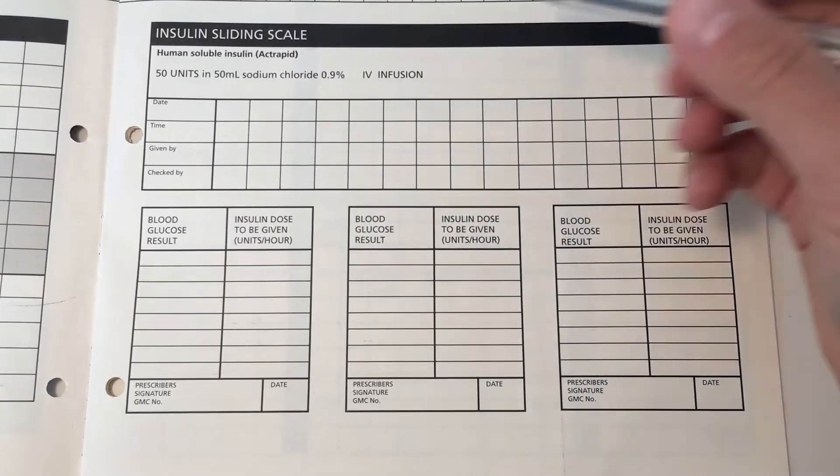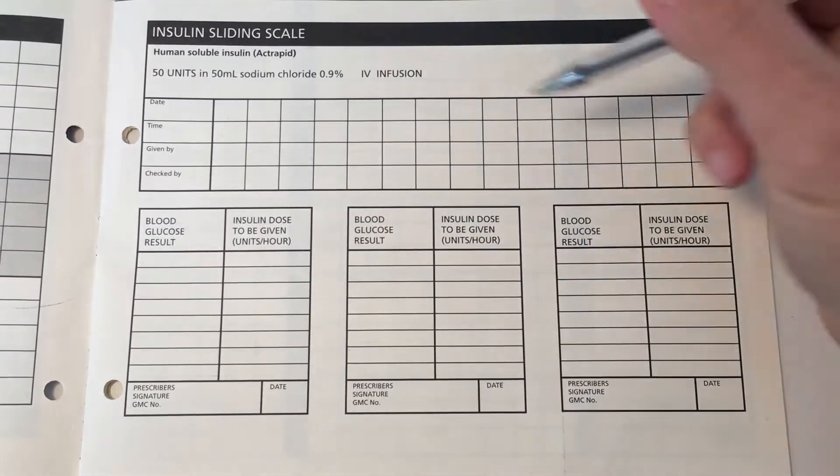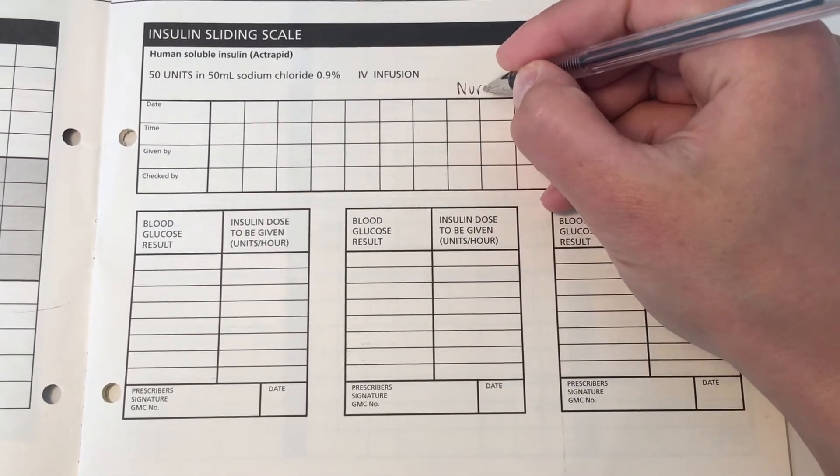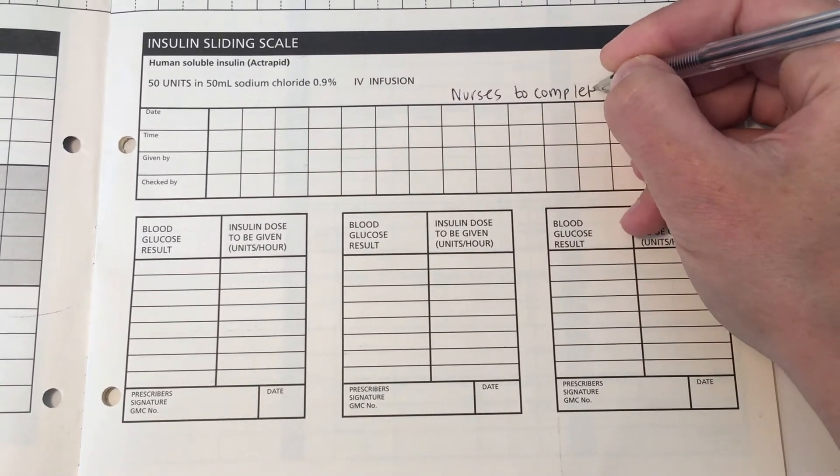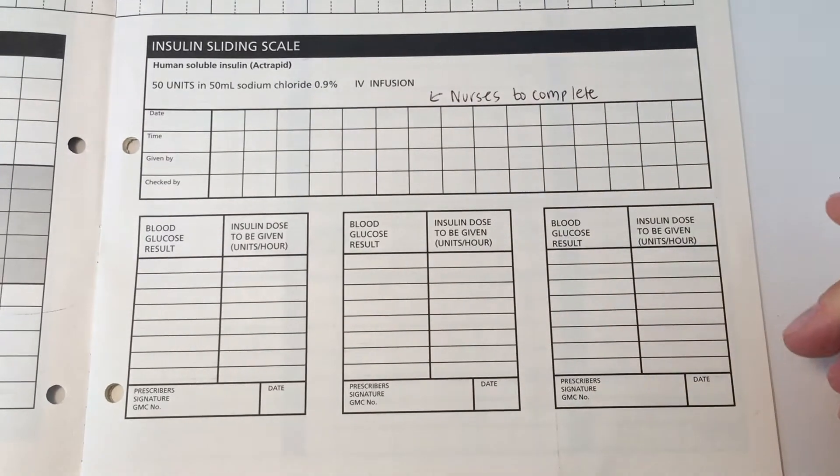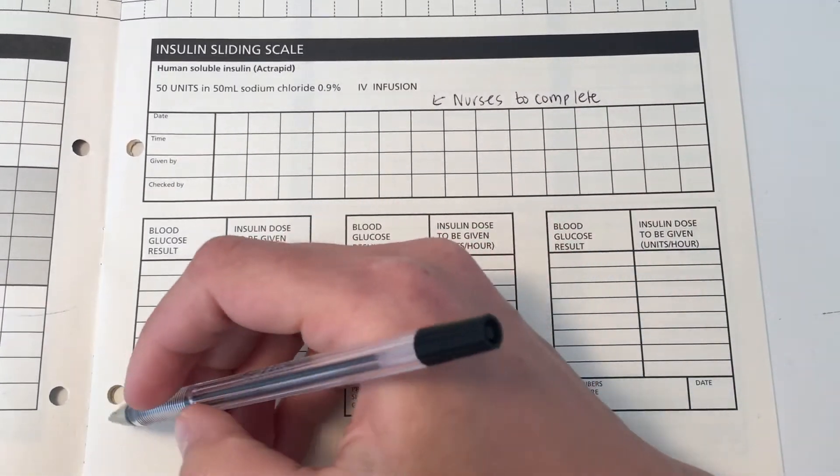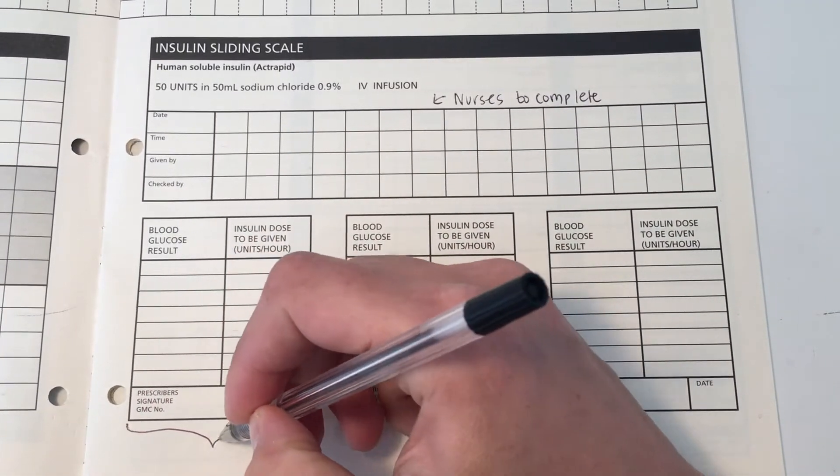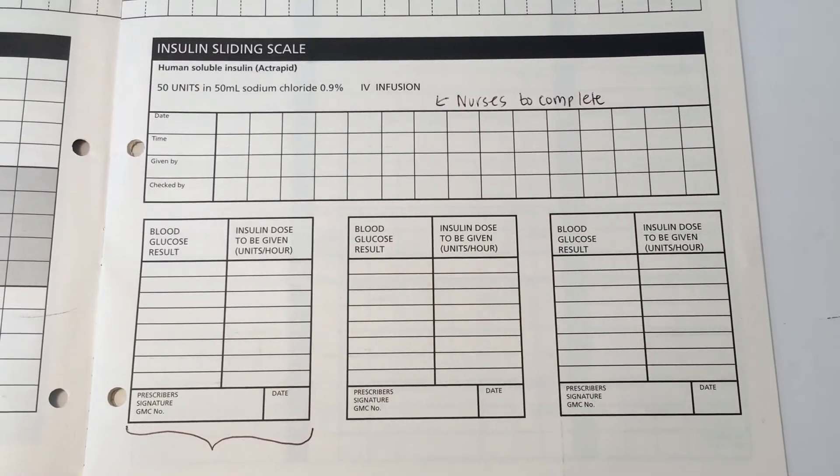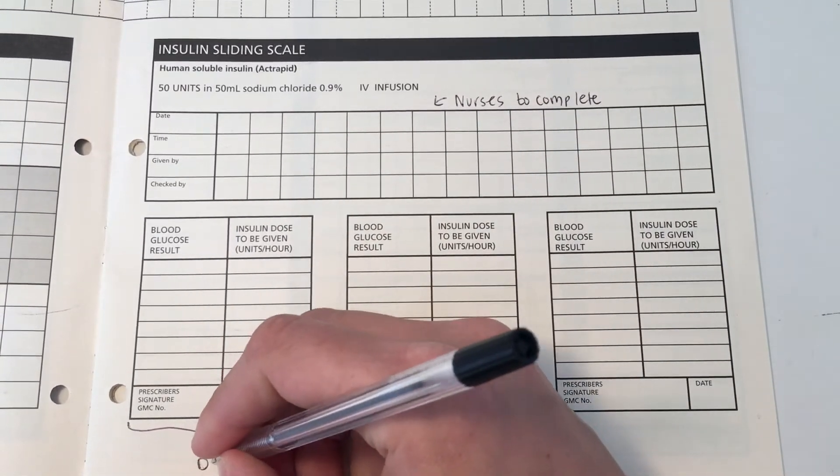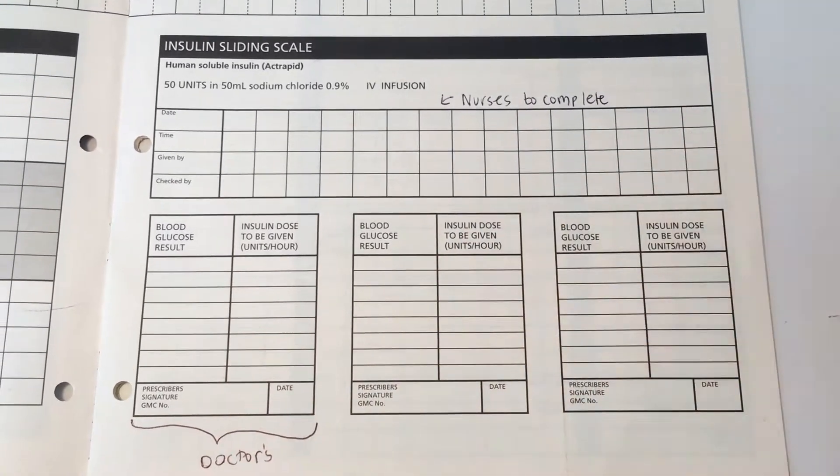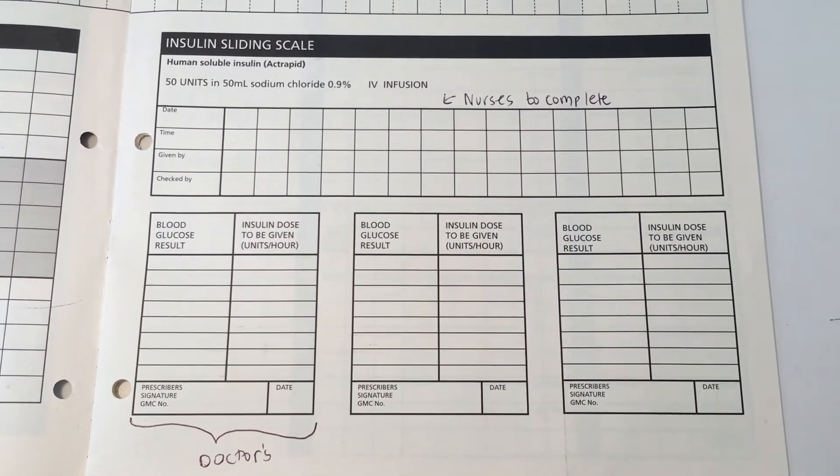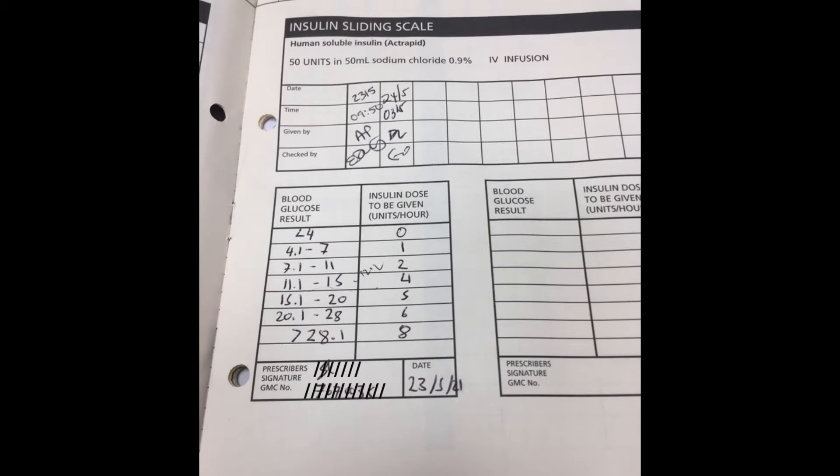Now this section is for variable rate insulin and there's lots of indications for this including patients who are unable to orally intake food and fluid, who can't have their own insulin regimen, or are constantly vomiting. This is going to be very much directed by your own trust guidelines. So this top section the nurses will fill in, and in this section here doctors will fill in the blood glucose results and how much insulin they want given for each of those glucose levels. This again will be dependent on the trust guidelines. This is an example of what it may look like.